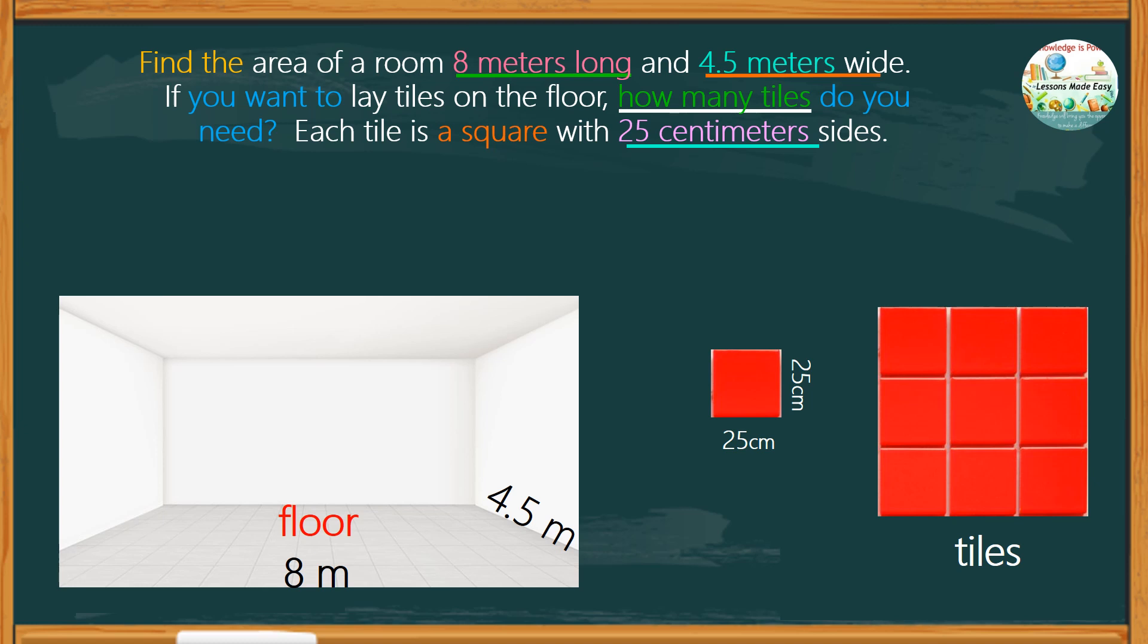Since the floor is rectangular in shape, to find the area, we multiply the length by the width. The length is 8 meters times the width of 4.5 meters. Then, divide by the area of each tile.